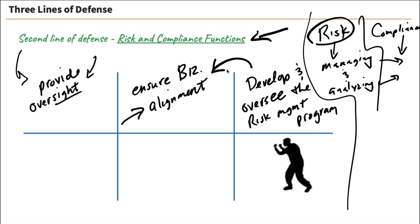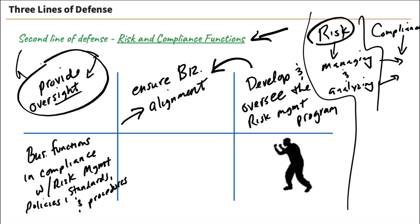They're also responsible to make sure that the individual business functions are in compliance with the risk management policies, standards, and procedures. This goes back to that oversight we talked about in the first step. They're supposed to make sure that the business functions, the individual units, are in compliance with the risk management as it pertains to the policies, the standards, and the procedures.